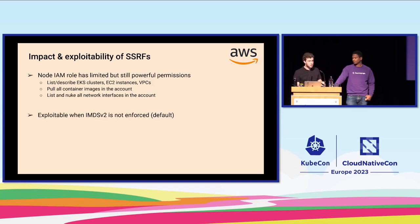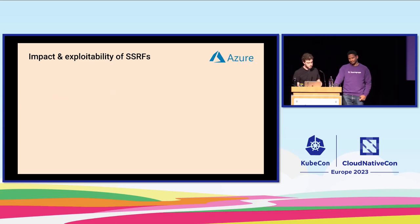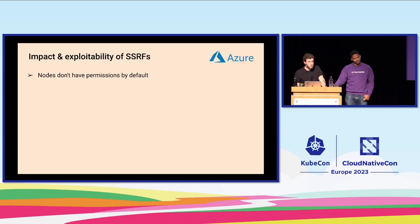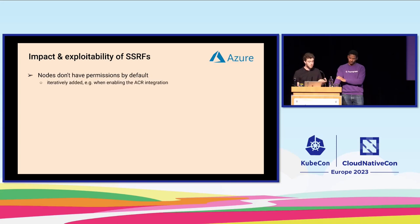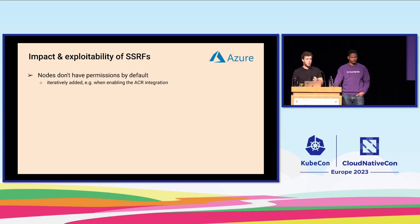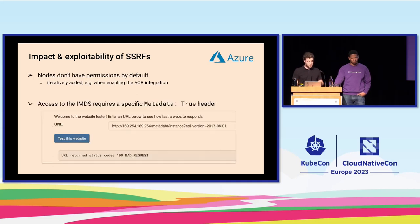In Azure, by default your worker nodes have a managed identity assigned but with nothing attached to that role — permissions are added iteratively. For example, when you enable integration with Azure Container Registry, it adds permission to pull from there. So the impact is less important. Also, when you try to talk to the Azure instance metadata service, they require you to add a specific header — metadata: true — to show you are intending to call it.